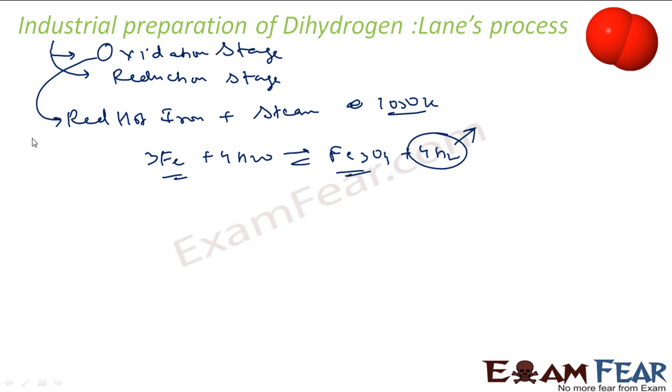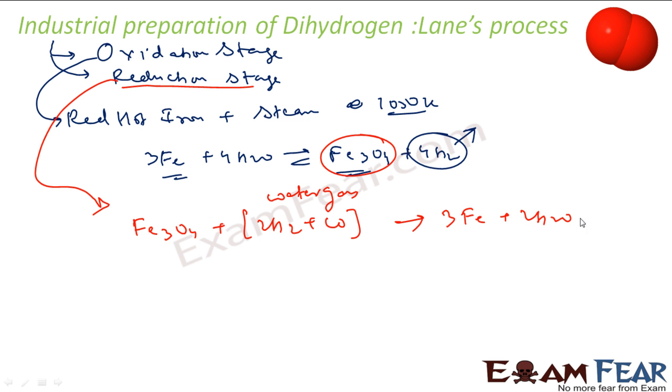Let me change the color. Now I will talk about the reduction stage. In reduction stage, what we do is whatever we have got, Fe3O4, we pass with water gas. We will talk about water gas. This is nothing but combination of hydrogen and carbon monoxide. The two hydrogen molecules we get from here only, or we can prepare the water gas separately. We get 3Fe plus 3H2O plus CO. So with this, if you see, the iron is returned back to the system.